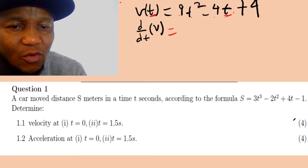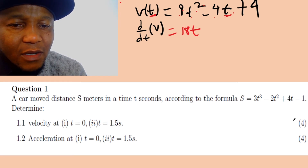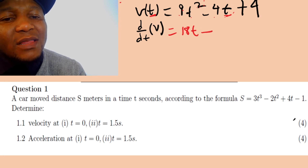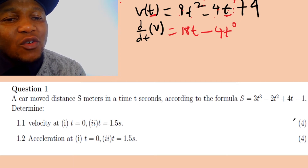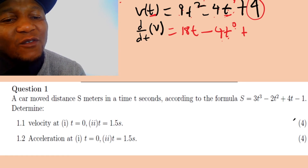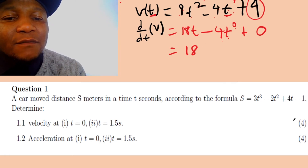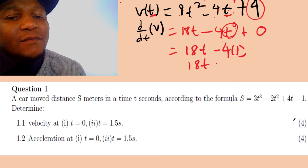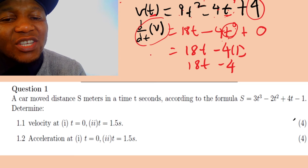Let's differentiate the velocity v = 9t² minus 4t plus 4. Differentiating 9t²: 2 times 9 equals 18, and t² becomes t¹ which is just t — giving 18t. Differentiating minus 4t: power is 1, so 1 times 4 equals 4, and t¹⁻¹ = t⁰ = 1, giving minus 4. Differentiating the constant 4 gives 0. So acceleration equals 18t minus 4.